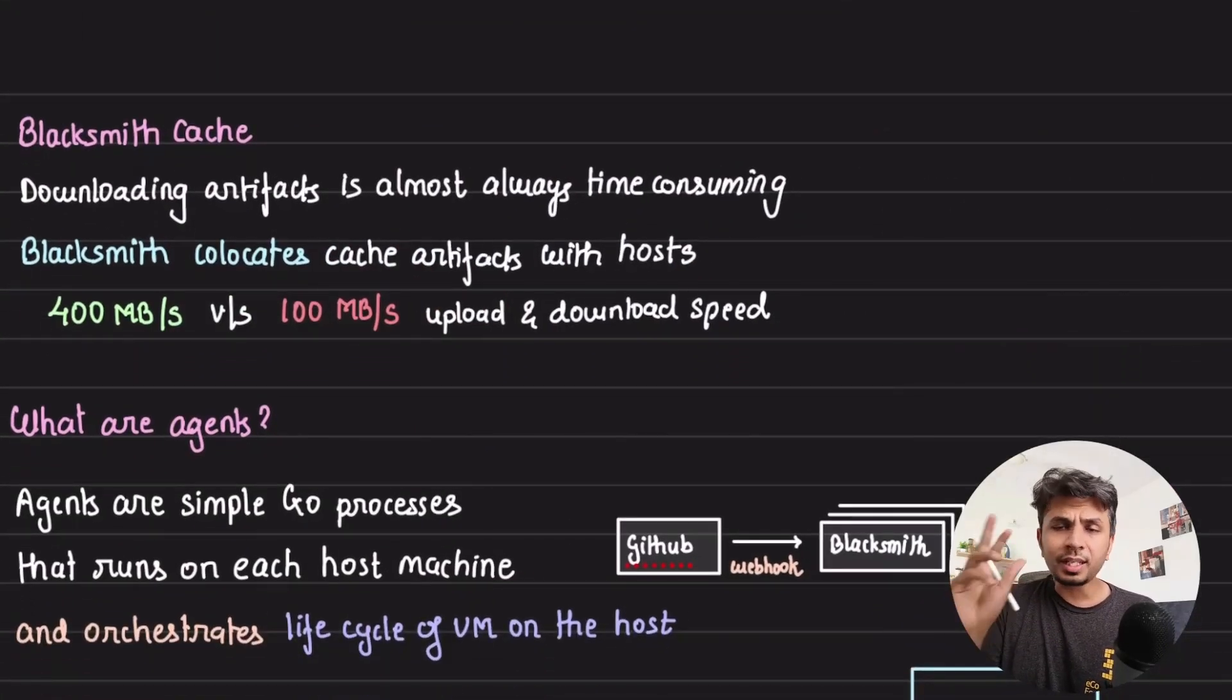Now, apart from this, what all is very interesting thing that these guys are doing or Blacksmith is doing. So, if you observe carefully for your CI/CD job, there are a lot of artifacts that you cache. Now, in case of regular GitHub runners, again, these are cached on network attached storage.